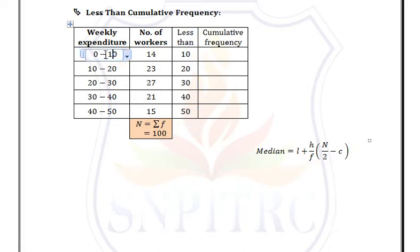For example, in class 0 to 10, the ending point is 10, so the next class must start from 10, giving 10 to 20. The ending point 20 leads to the next class starting from 20, and so on. This is exclusive form.